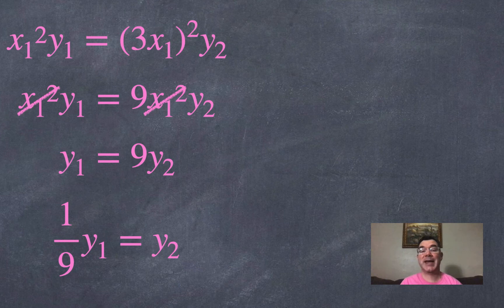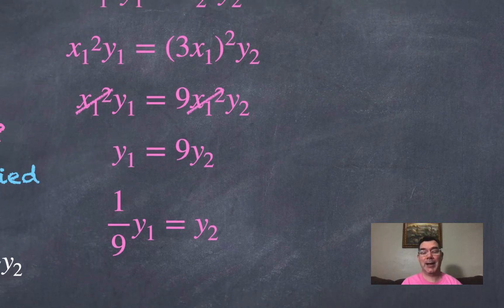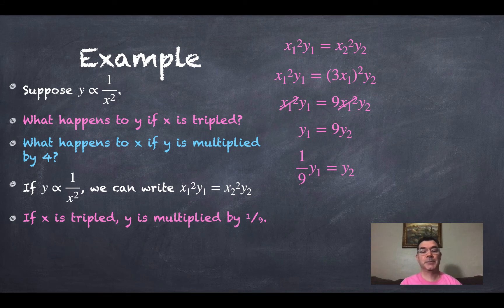So what that means is if x is tripled, then in order to get my second y I would have to take my first y and divide it by 9. Y is going to be multiplied by 1/9 or divided by 9.